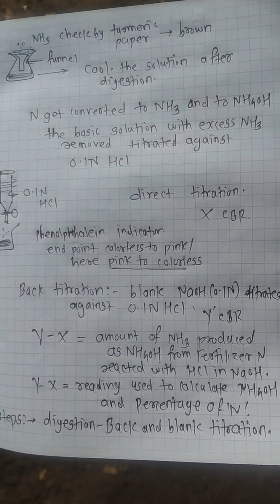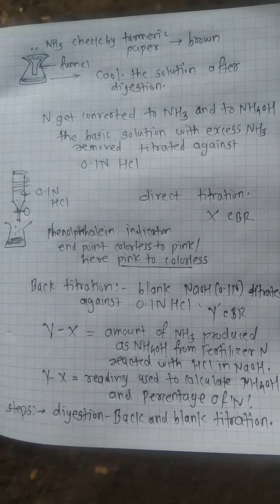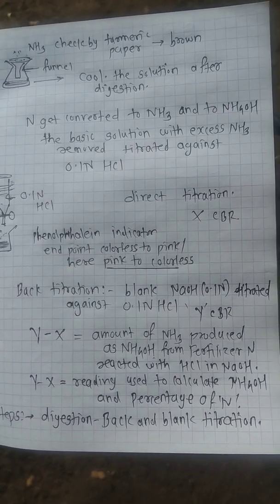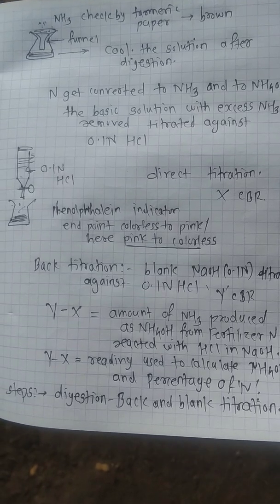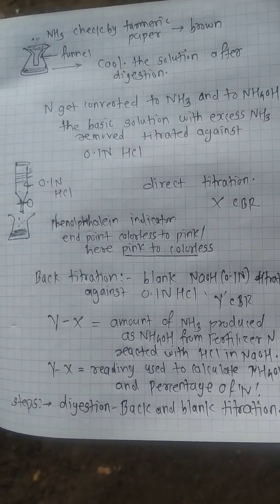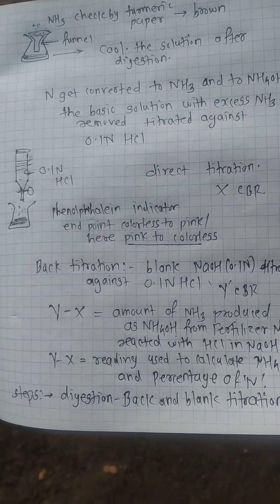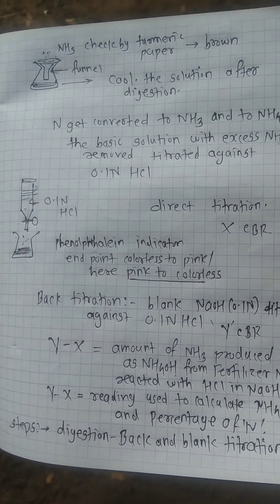In the back titration blank, 0.1 normal NaOH is directly titrated against 0.1 normal HCl to get Y, constant burette reading. So here, direct amount of NaOH is titrated against HCl for 0.1 normal concentration. The difference of Y minus X, that is back minus blank titration.